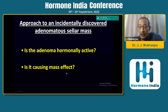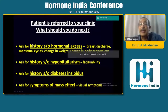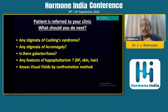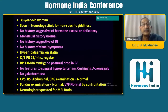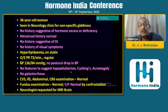What do we do? Is the adenoma hormonally active? Is it causing mass effect? You need to take a detailed history. Ask about hypophysitis and diabetes insipidus. Look for visual symptoms. Look for stigmata of Cushing's syndrome, acromegaly, galactorrhea, features of hyperprolactinemia, pale skin and hair loss. Assess visual fields by confrontation. A proper history for this lady: seen in neurology clinic for nonspecific giddiness, no history of hormone excess or deficiency, menstrual history normal, no visual symptoms, no postural drop in BP — hinting at adrenal insufficiency — no features to suggest hypopituitarism, no Cushing's or acromegaly on examination, no galactorrhea, visual field normal.